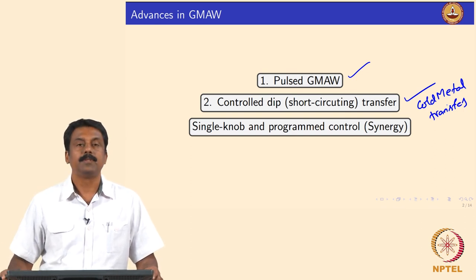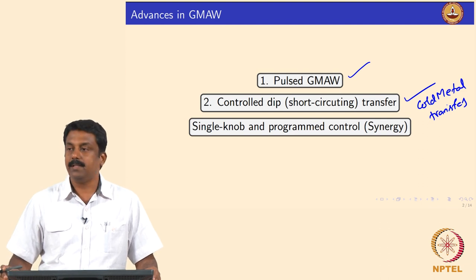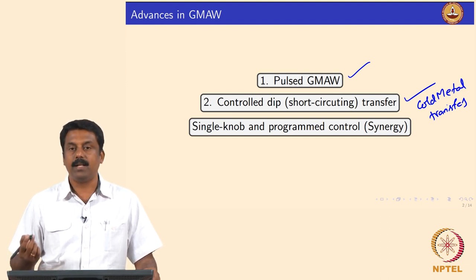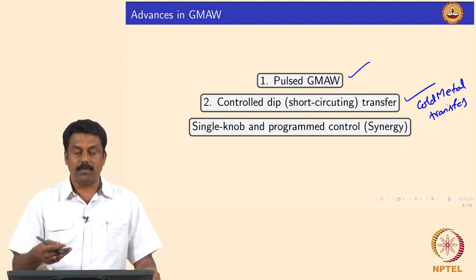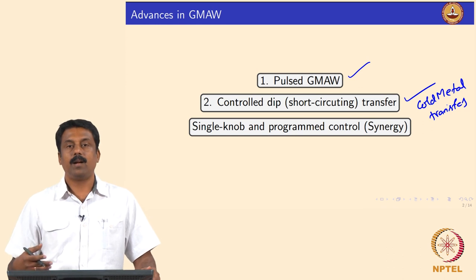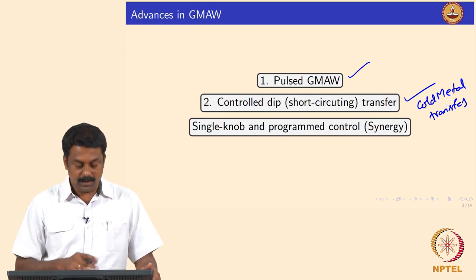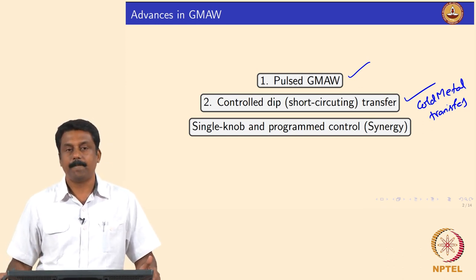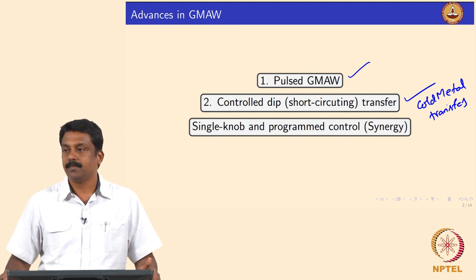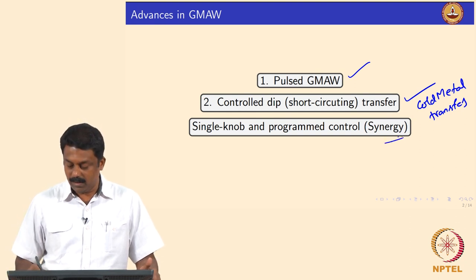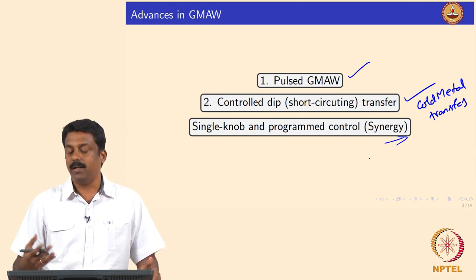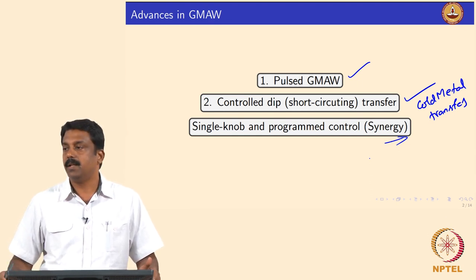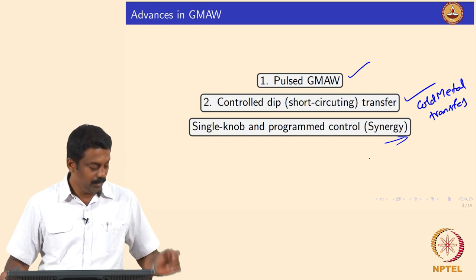These two processes are made possible by advancements in the power source. One such advancement widely used for achieving pulsing and controlled short-circuiting transfer is inverter-based power sources. We will look at what inverter power sources mean and how they are used to achieve these advancements in GMAW.